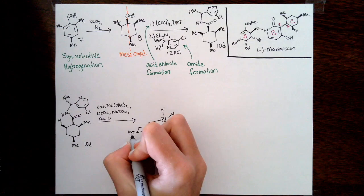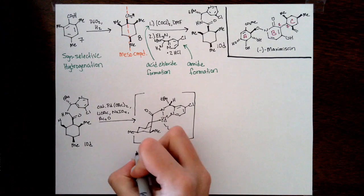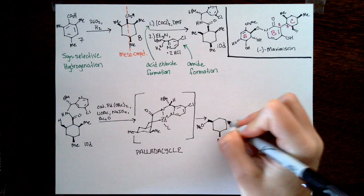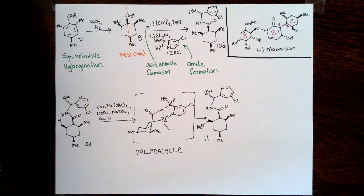They screened the addition of a bunch of different directing groups onto that carboxylic acid functionality. They ended up picking a chiral PIP-type directing group. Having a 4-chloro off of the pyridine ring ended up giving them the best yield at 58% with almost a perfect diastereoselectivity for the methanol addition to one of those two methyl groups.